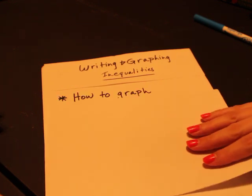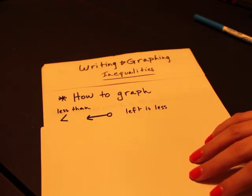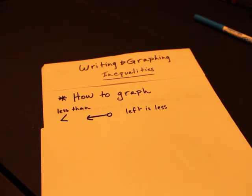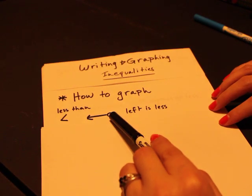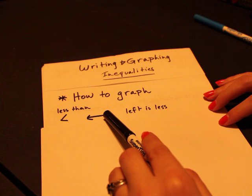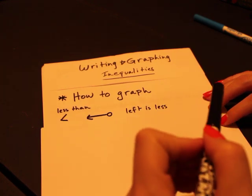So first, how do we graph? We start with less than. If you have an inequality where your variable is less than some number, you're going to use an open circle and shade to the left.